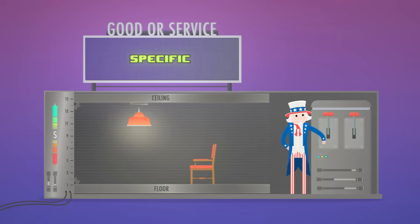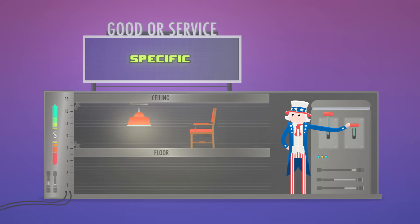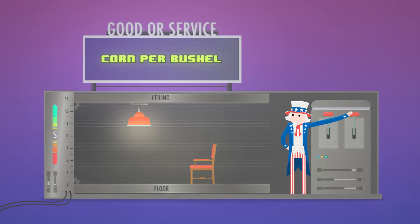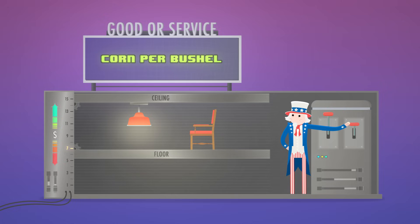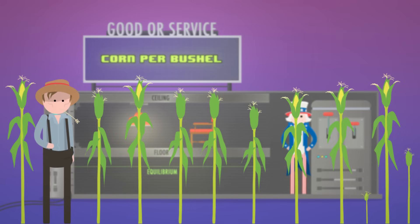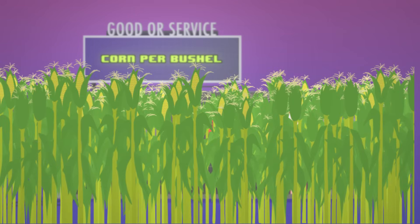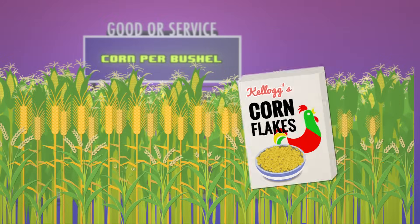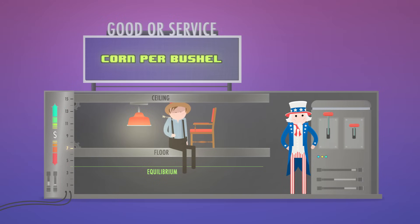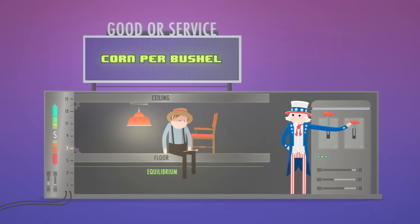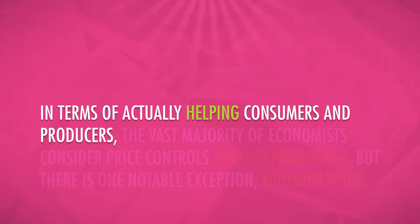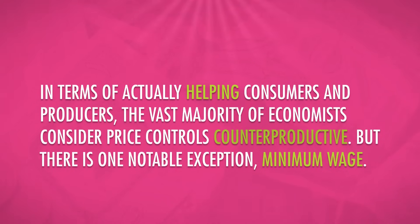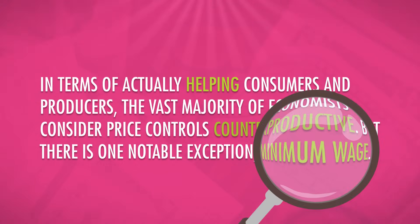A price floor is a law that sets a minimum price in a specific market. The idea is to help by keeping the price artificially high and not allowing it to fall down to equilibrium. Let's make up an example using corn. Assume the government set a price floor for a bushel of corn at $7, when the actual equilibrium price is $4. The higher price would give farmers an incentive to produce more, but at that high price, consumers would buy substitutes like wheat or rice — instead of corn flakes, they'd buy Rice Krispies. The farmers wouldn't necessarily be better off; they could sell corn at the higher price, but they wouldn't have as many customers. The vast majority of economists consider price controls counterproductive. But there is one notable exception: minimum wage, which we're going to address in a future video.